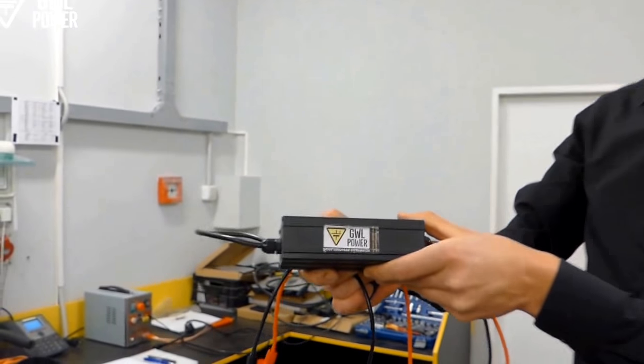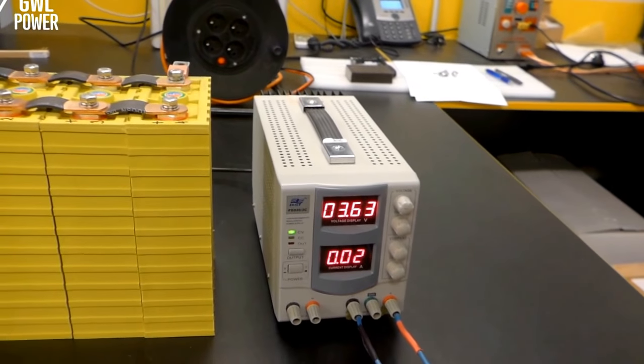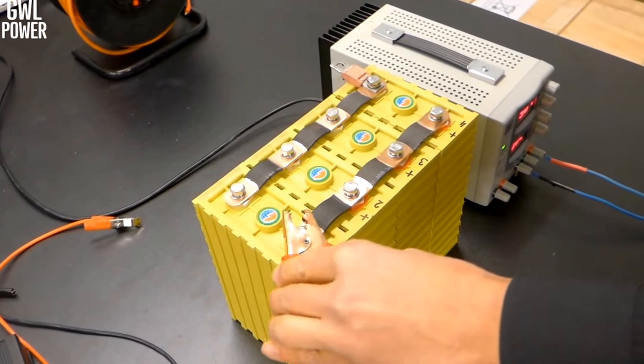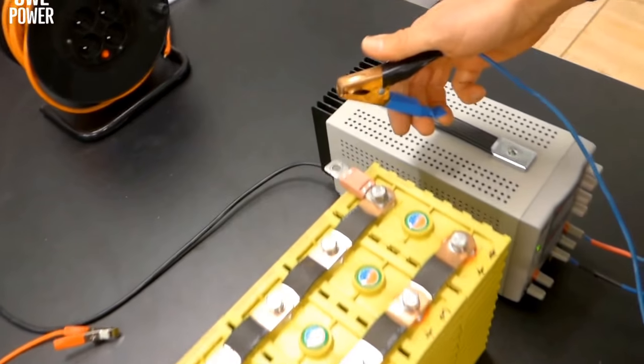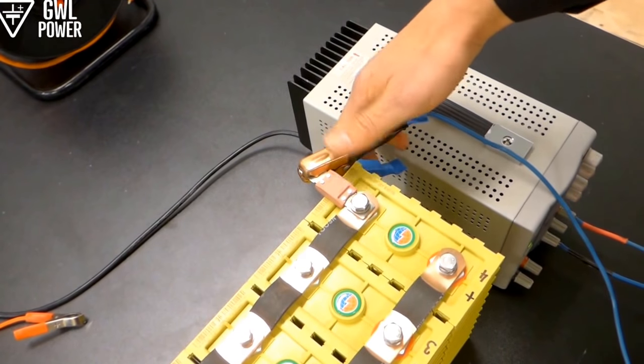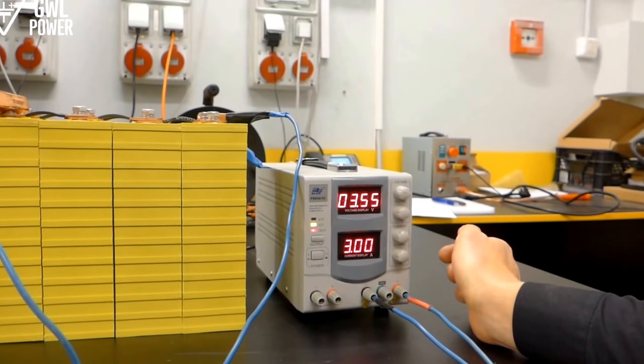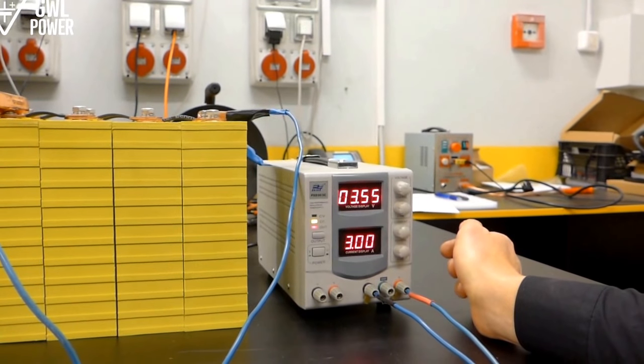Connect the single cell charger or laboratory power supply to opposite sides of the pack. Use 3.55 or 3.6 volts for initial charging.